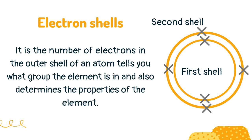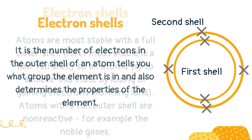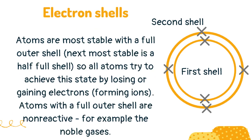The number of electrons in the outer shell of an atom tells you what group the element is in and also determines the properties of the element. Atoms are most stable with a full outer shell; the next most stable is a half full shell, so all atoms try to achieve this state by losing or gaining electrons, forming ions.